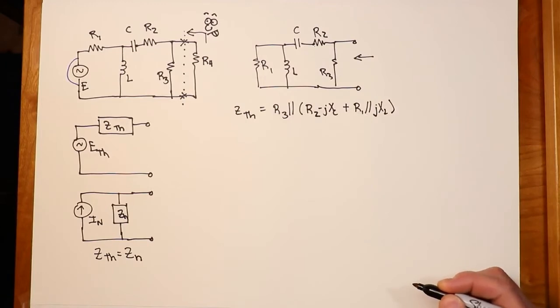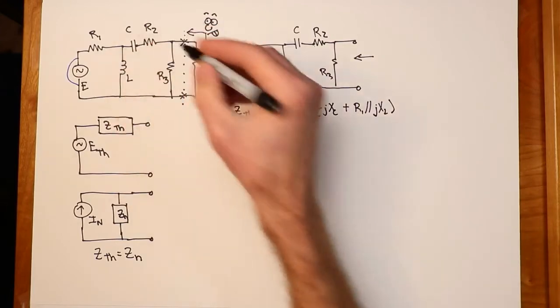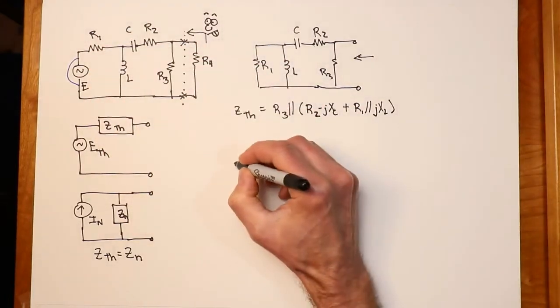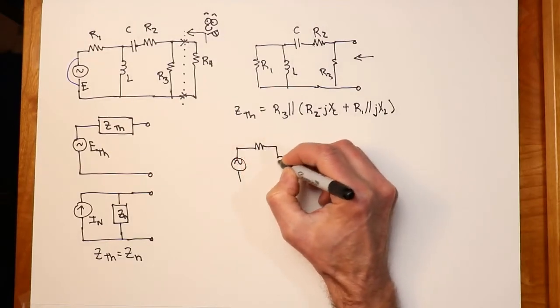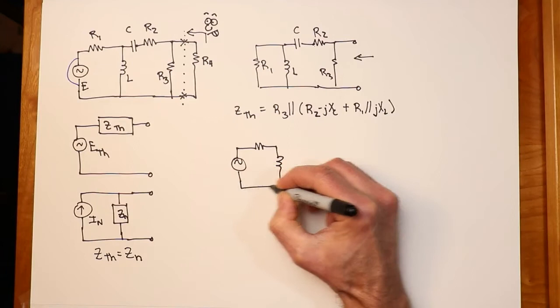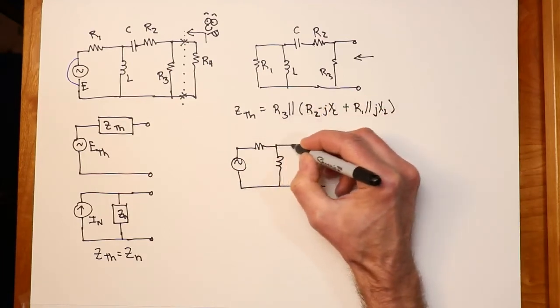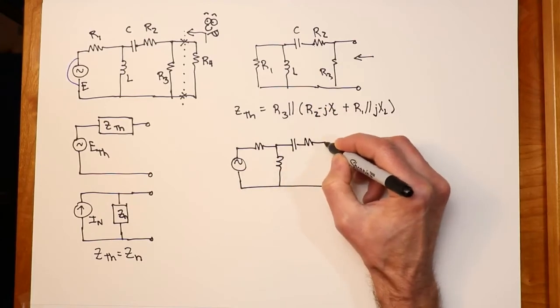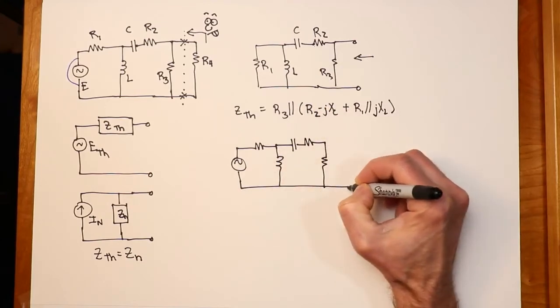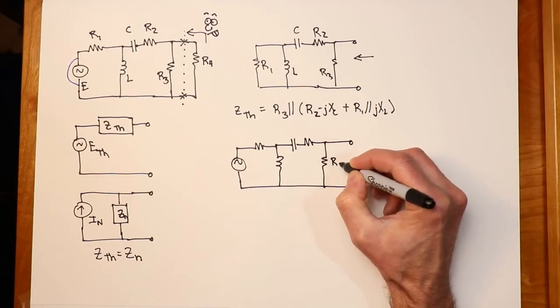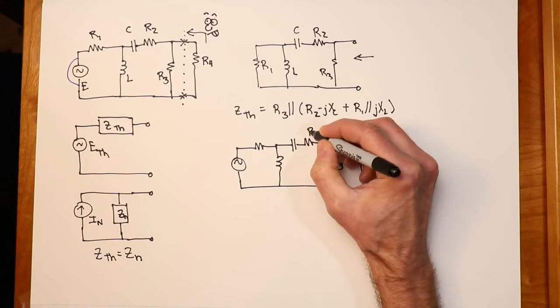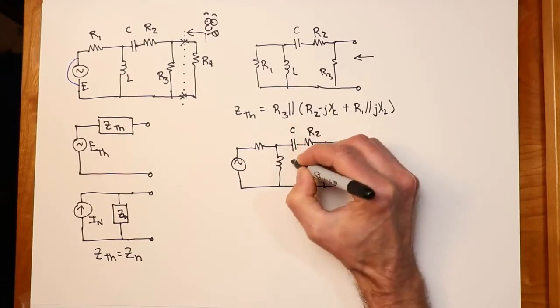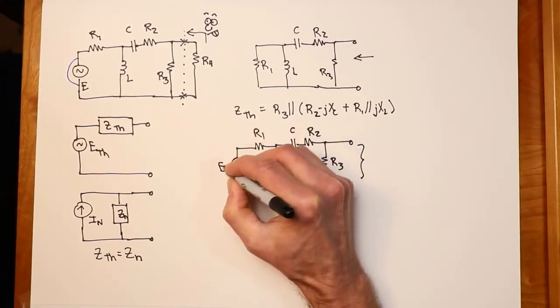Now what about the voltage? What's E-Thevenin? How do we find that? Well, we find the open circuit output voltage, so I'm going to repeat this original, but we'll just leave off the R4. And we ask, what is the voltage that we see out here at these open terminals? So there's R2, here's the capacitor inductor, R1, here's my source E.